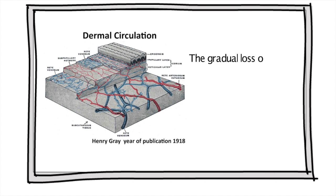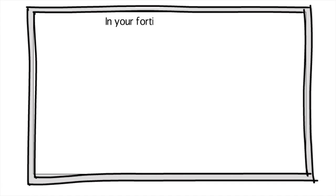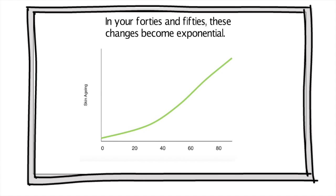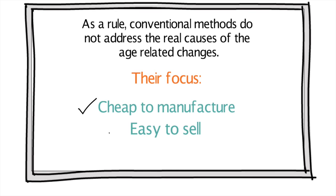The gradual loss of dermal circulation accelerates the rate of your skin aging and creates a self-reinforcing degenerative cycle. In your 40s and 50s, these changes become exponential. As a rule, conventional methods do not address the real causes of the age-related changes. They focus on easy profits, selling you what is cheap to manufacture and easy to sell.